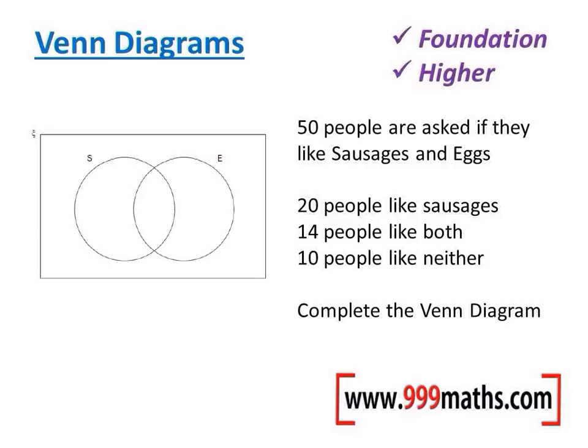So this question is about people who like sausages and eggs. They're asked if they like sausages, eggs, or both. Now 20 people like sausages. That means that in this circle over here there needs to be a total of 20. However, we are not going to put 20 in here or in here just yet, but in that circle in total there needs to be 20.